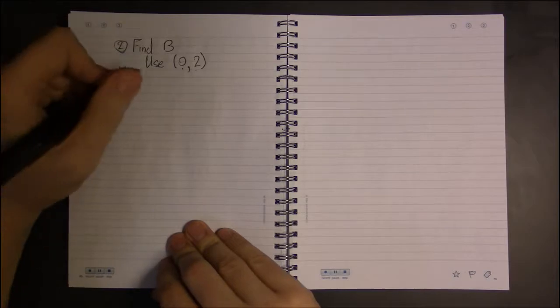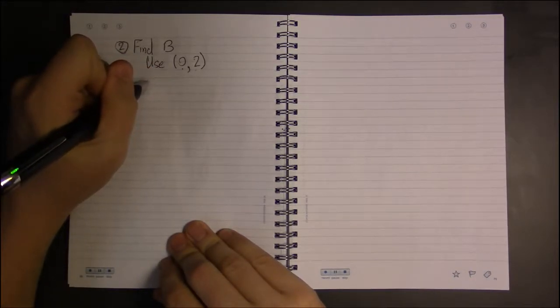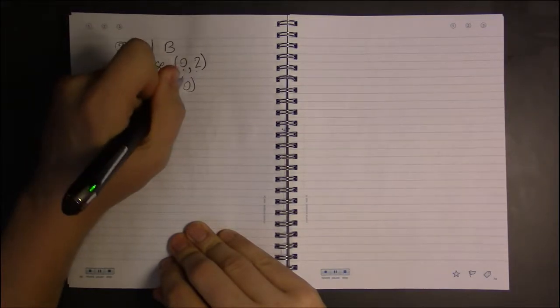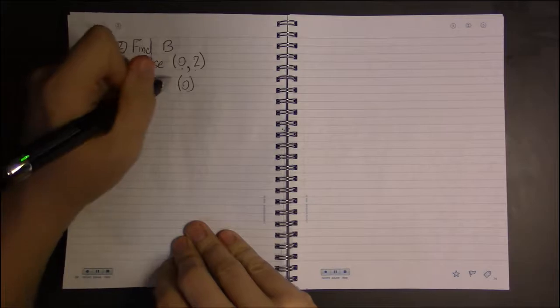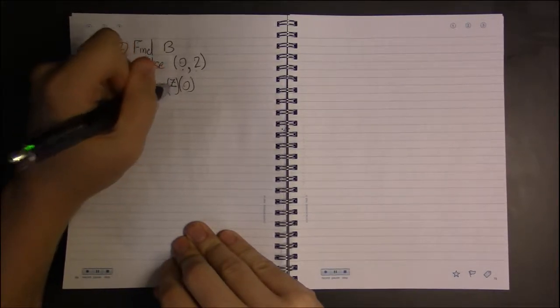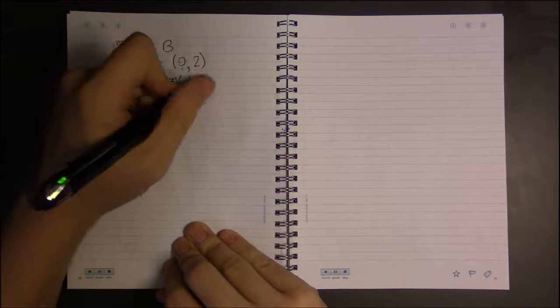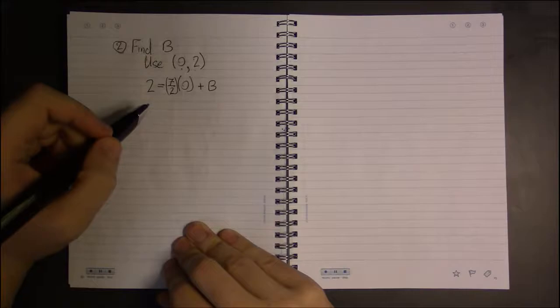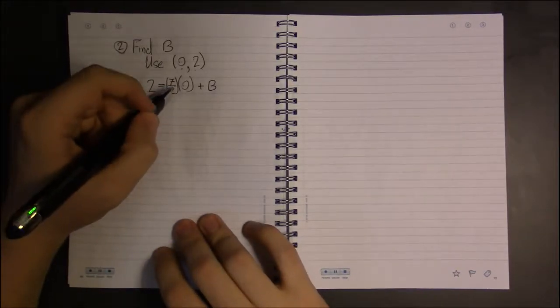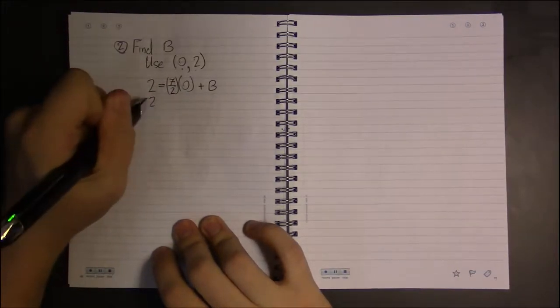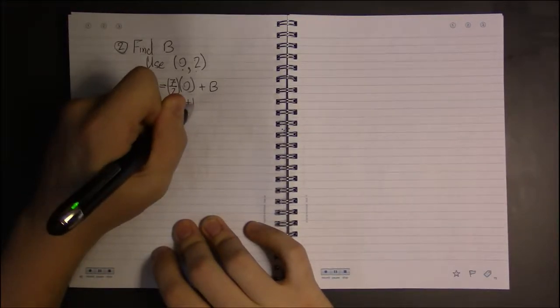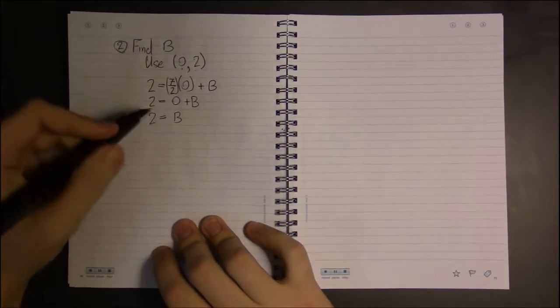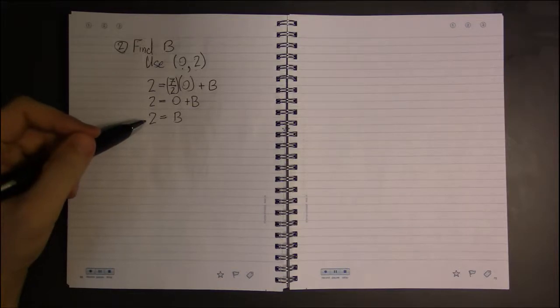point slope form, again feel free to use it. So we plug in 0 for X, 2 for Y. So instead of y equals it's going to be 2 equals M times X - well X is 0, and M was -7/2, and we don't know what B is, that's the whole point of this, we're trying to find out what B is. Well that's simple. -7/2 times 0 is just 0. 0 plus B is just B, and so we find that our y-intercept is 2.